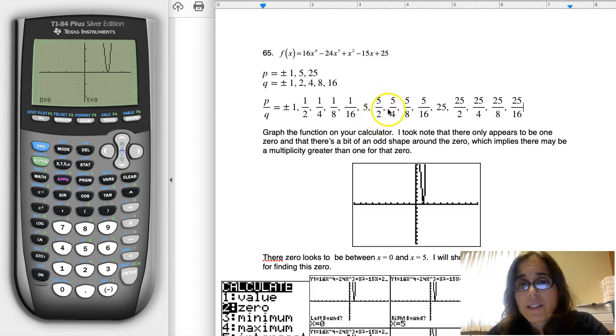This is 5 halves, that's not, but 5 fourths is. So that's a candidate, not between 1 and 2, not between 1 and 2. This one, 25 sixteenths, is also between 1 and 2.